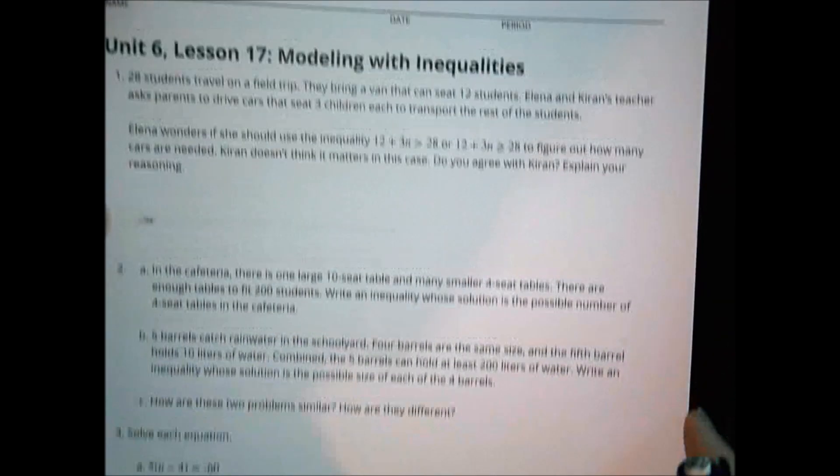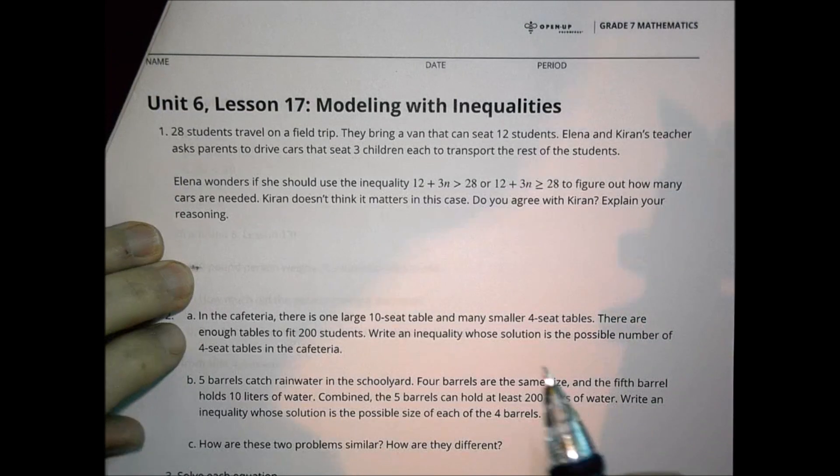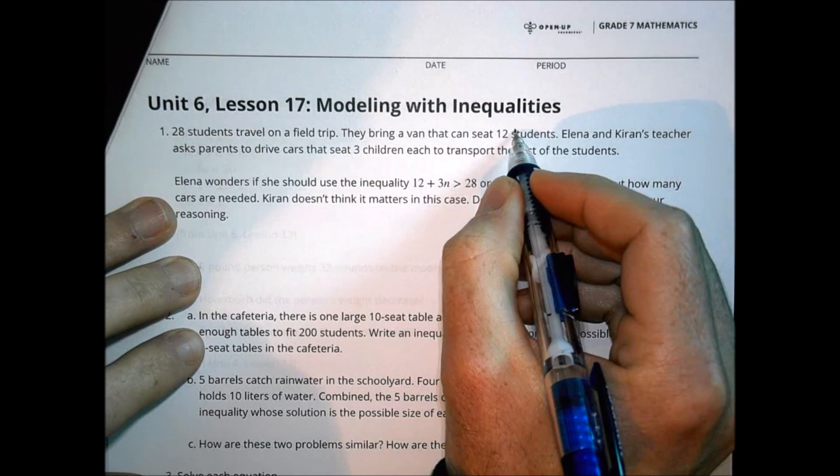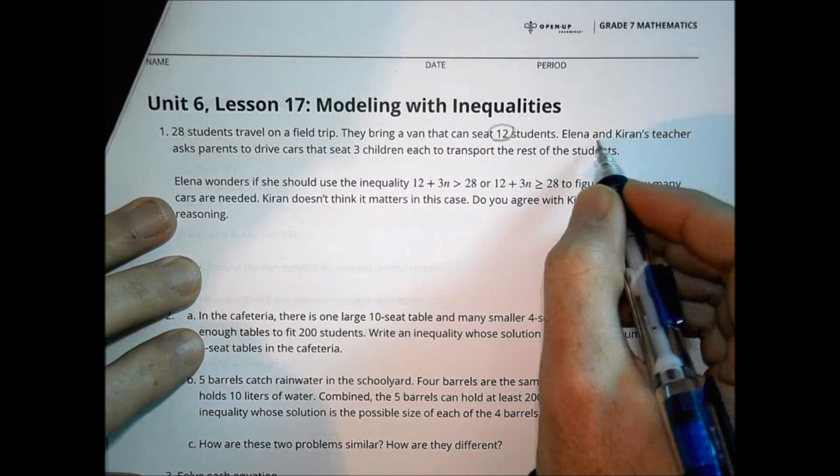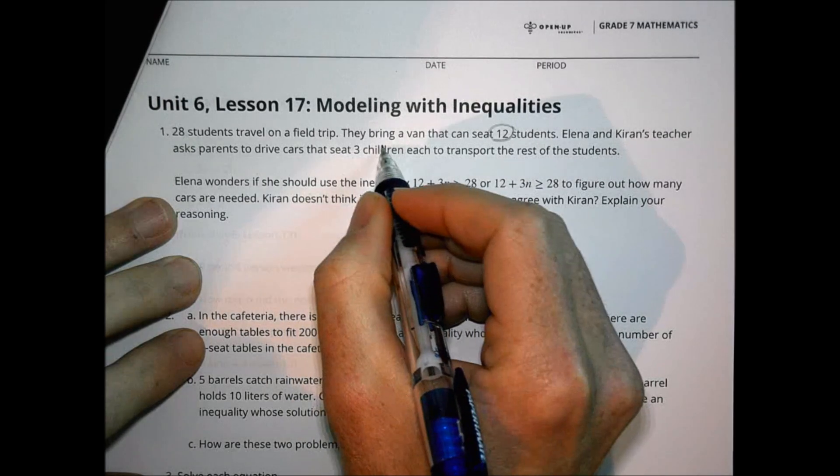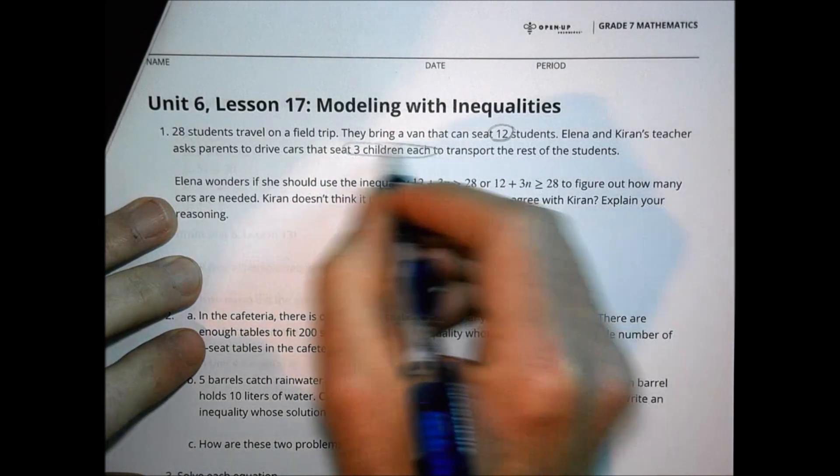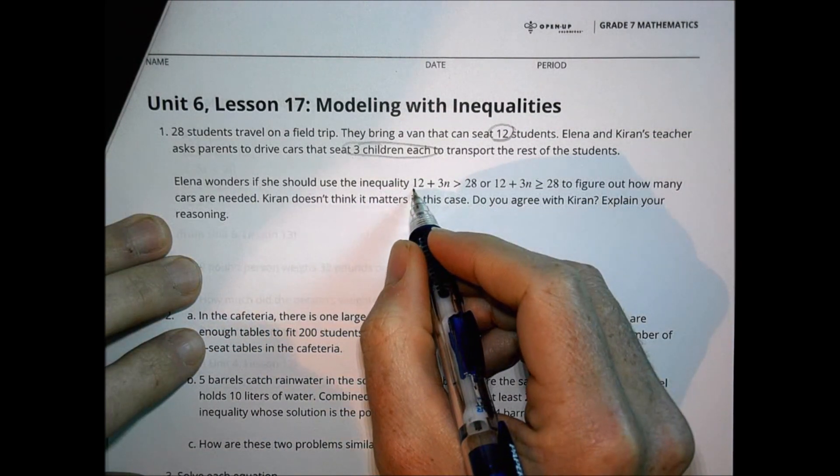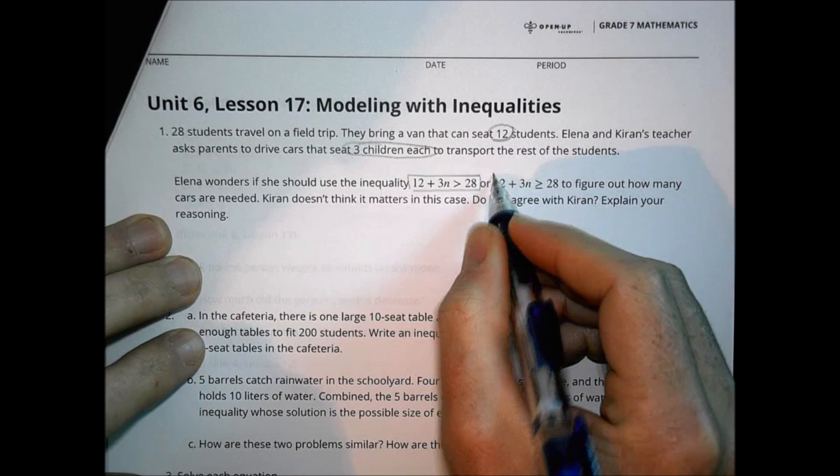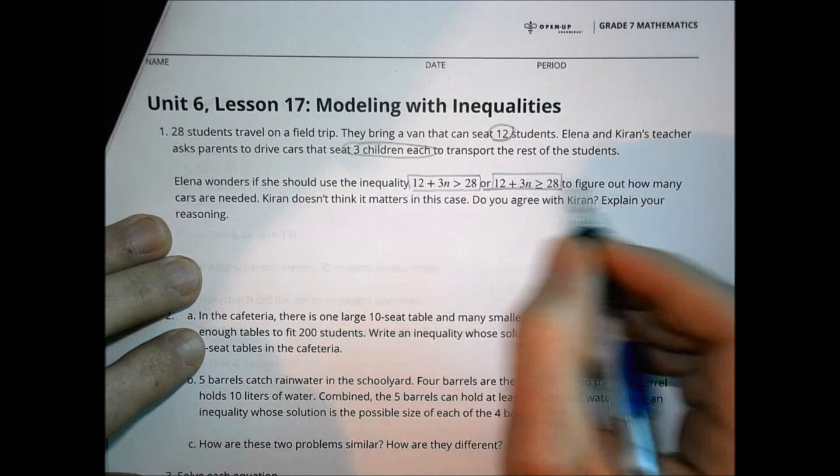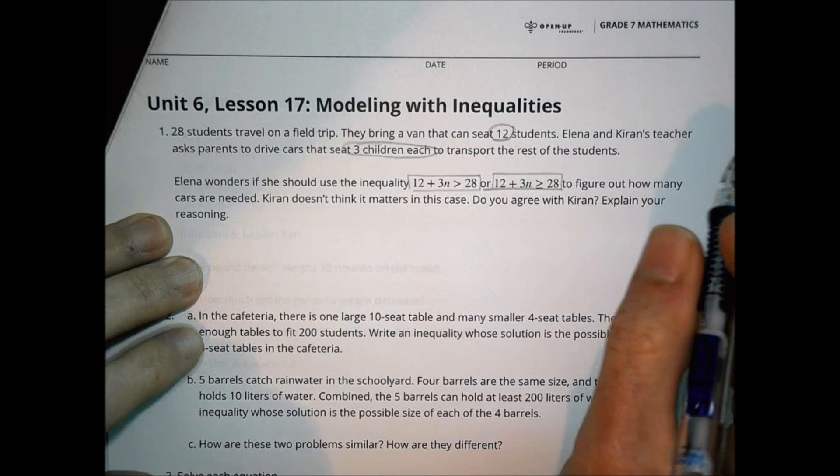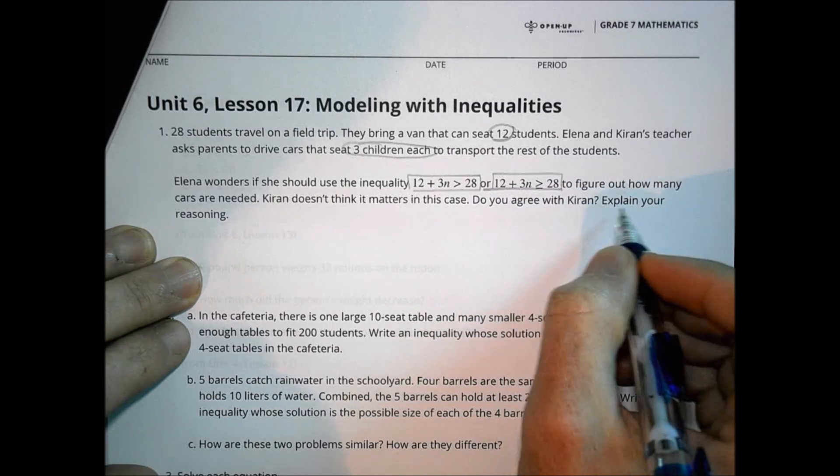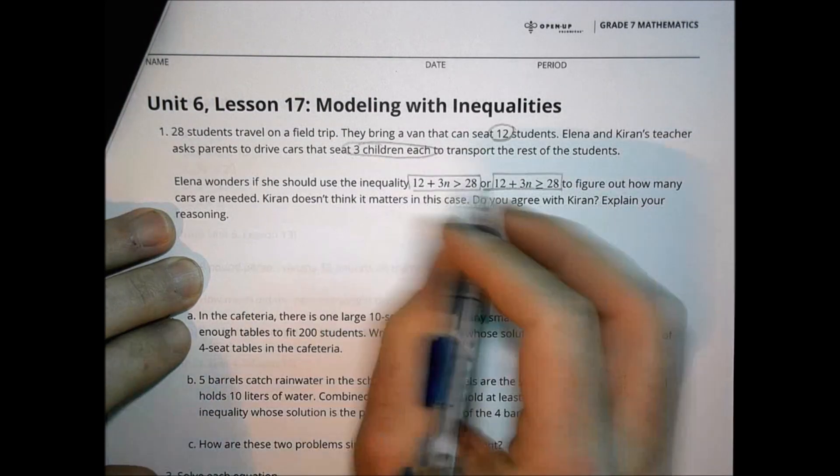Here is today's homework, Unit 6, Lesson 17. It says 28 students travel on a field trip. They bring a van that can seat 12 students. Elena and Karen's teacher asks parents to drive cars that seat three children each to transport the rest of the students. Elena wonders if she could use the inequality 12 plus 3N is greater than 28 or 12 plus 3N is greater than or equal to 28 to figure out how many cars are needed. Karen doesn't think it matters in this case. Do you agree with him and explain your reasoning?